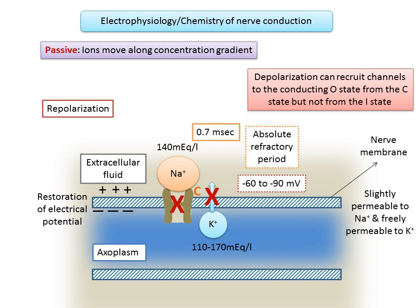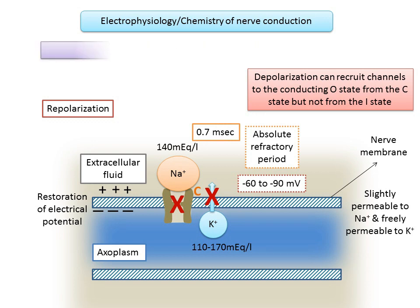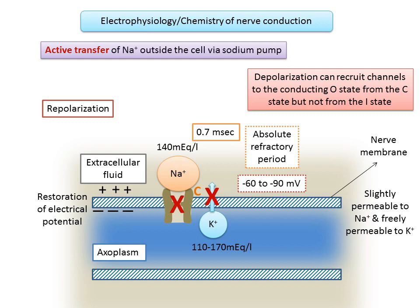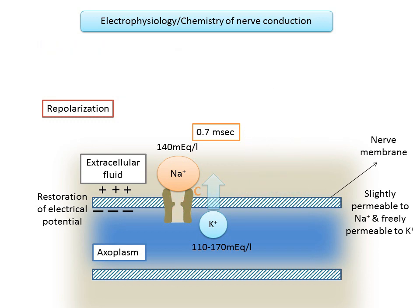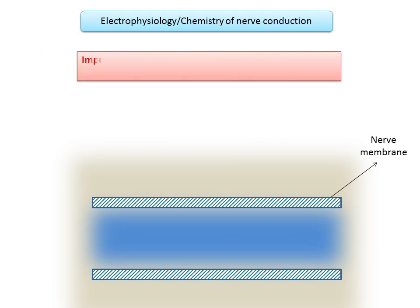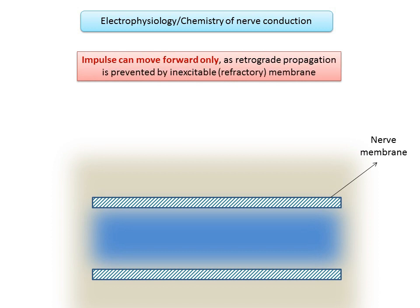Repolarization takes about 0.7 milliseconds. After the membrane potential returns to its original level of minus 70 millivolts, a slight excess of sodium exists within the nerve cell along with a slight excess of potassium extracellularly. A period of metabolic activity then begins in which active transfer of sodium ions out of the cell occurs via the sodium pump. All these electrophysiological changes in nerve conduction occur in one direction only — the impulse can move forward only, as retrograde propagation is prevented by the inexcitable or refractory membrane. The stimulus disrupts the resting equilibrium of the nerve membrane, with the transmembrane potential momentarily reversed.